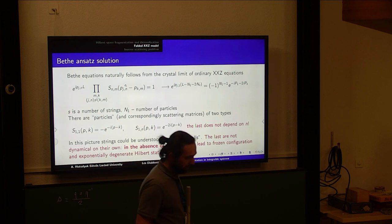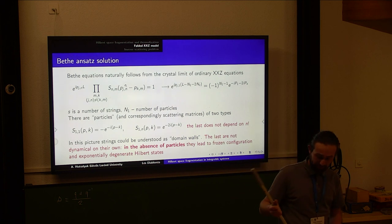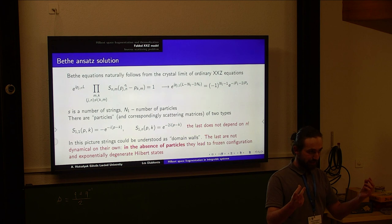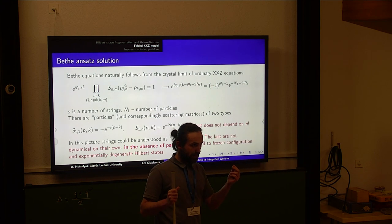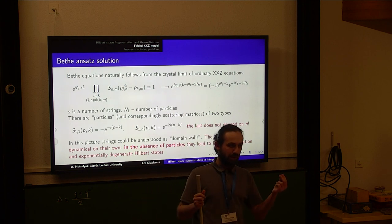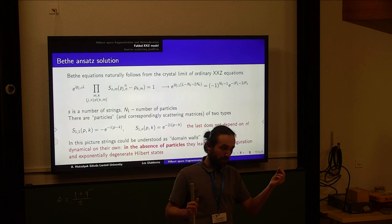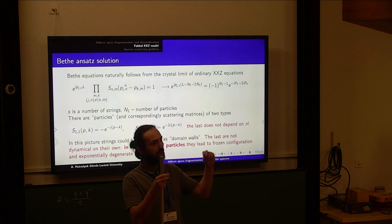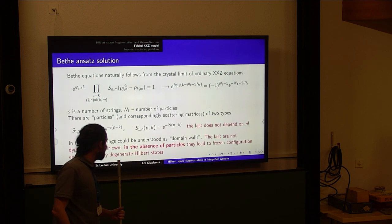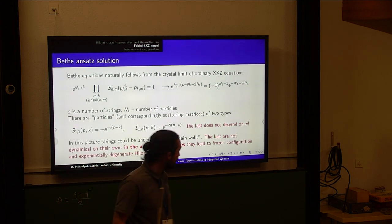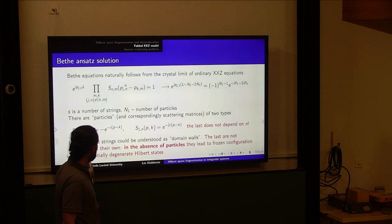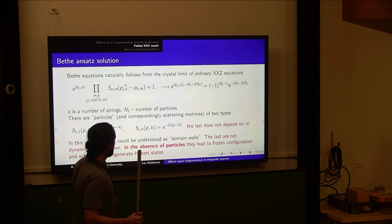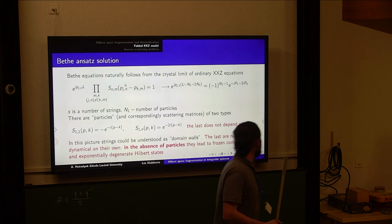Strings of length greater than one, regardless of whether they have length two or length ten, all behave in the same spectacular way: they don't move at all. They are literally static particles — frozen on the lattice. Acting with the Hamiltonian on them gives zero eigenvalue; they have zero energy. The only way to move strings of length greater than one is through interaction with the usual particles — the strings of length one, which are dynamical.